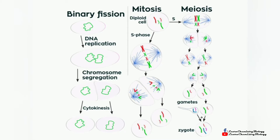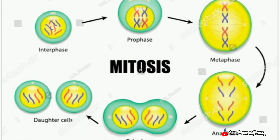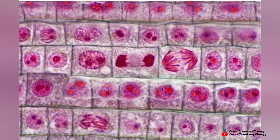There are three types of cell division: binary fission, mitosis, and meiosis. Today we will discuss mitosis. Most of the time when people refer to cell division, they mean mitosis — the process of making new body cells. Meiosis is the type of cell division that creates eggs and sperm cells.